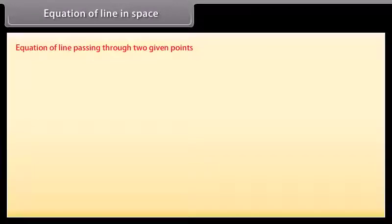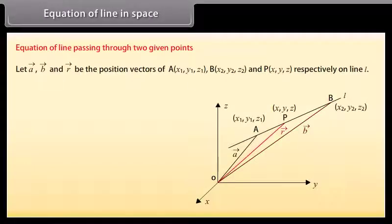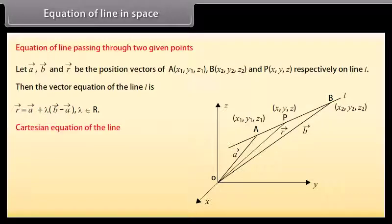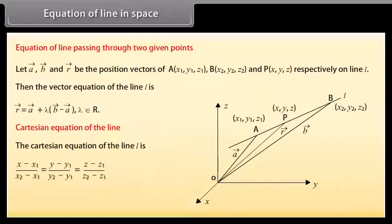Equation of line passing through two given points. Let vectors A, B and R be the position vectors of points A(X1, Y1, Z1), B(X2, Y2, Z2) and P(X, Y, Z) respectively on line L. Then the vector equation of the line L is: vector R equals vector A plus lambda times (vector B minus vector A), where lambda belongs to real numbers. The Cartesian equation of the line is: (X minus X1) by (X2 minus X1) equals (Y minus Y1) by (Y2 minus Y1) equals (Z minus Z1) by (Z2 minus Z1).